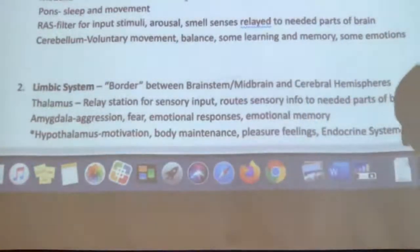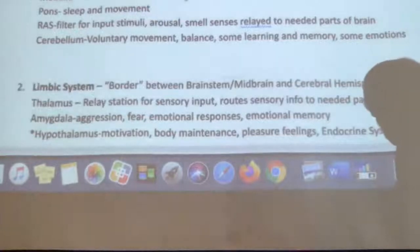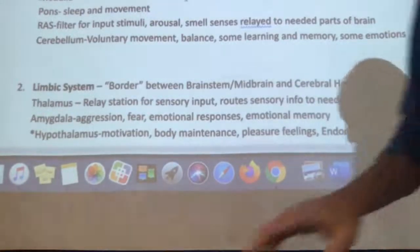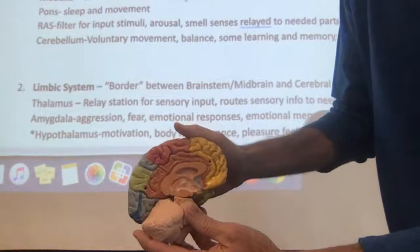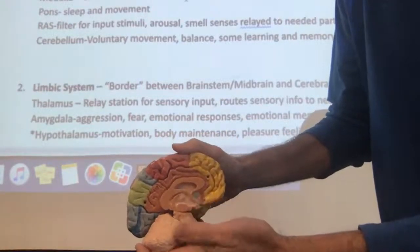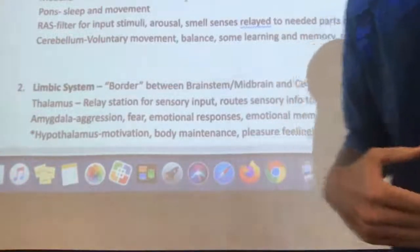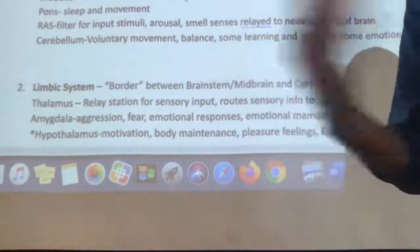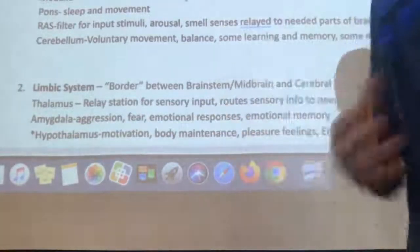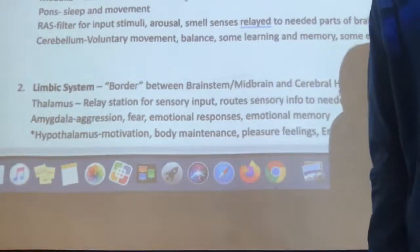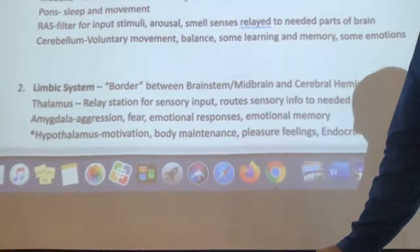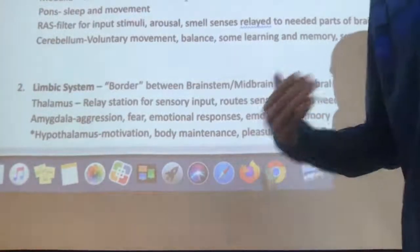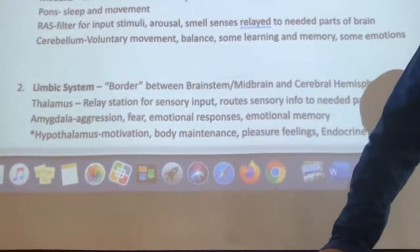The first is the thalamus, which is a relay station for sensory input — it routes all sensory information to the needed parts of the brain. It sits right above the reticular activating system, so once the RAS deems a stimulus important enough, it sends it to the thalamus, and the thalamus directs it wherever it needs to go. The amygdala is our aggressive, fear-based emotional center of the brain. We've already talked about it as it relates to anxiety, and it also stores emotional memory — if you have a memory with an emotion attached to it, that's the amygdala.